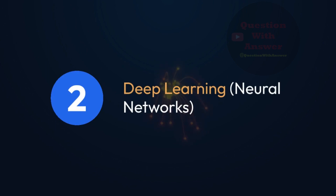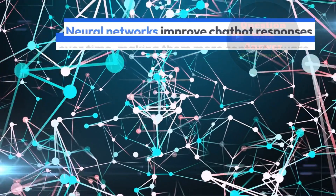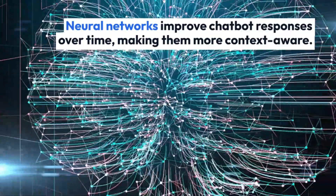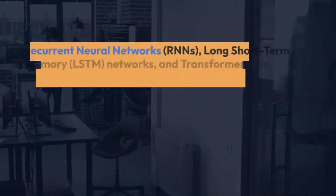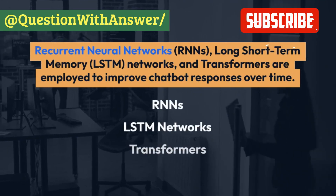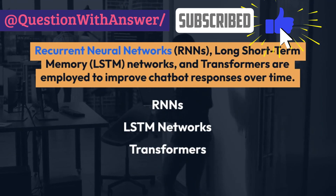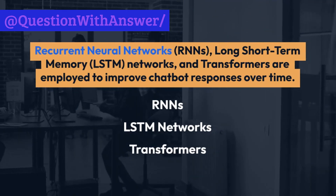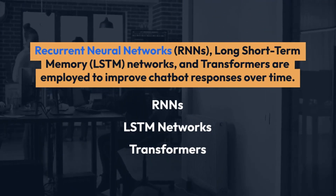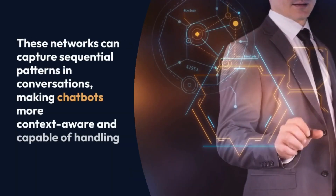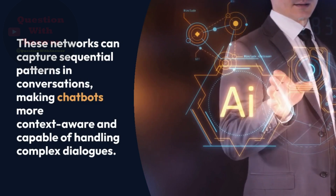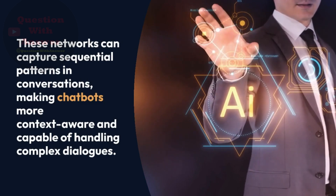2. Deep Learning Neural Networks. Neural networks improve chatbot responses over time, making them more context-aware. Recurrent neural networks (RNNs), long short-term memory (LSTM) networks, and transformers are employed to improve chatbot responses over time. These networks can capture sequential patterns in conversations, making chatbots more context-aware and capable of handling complex dialogues.